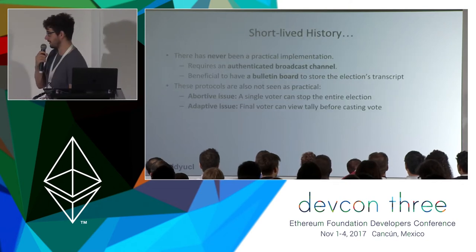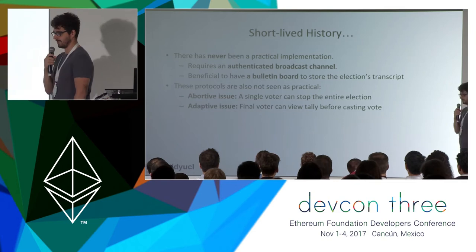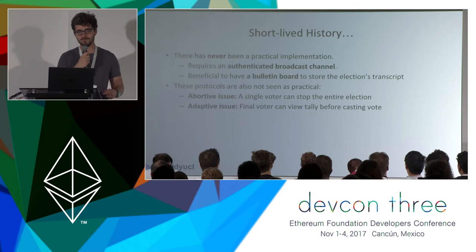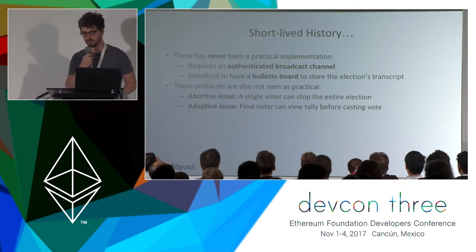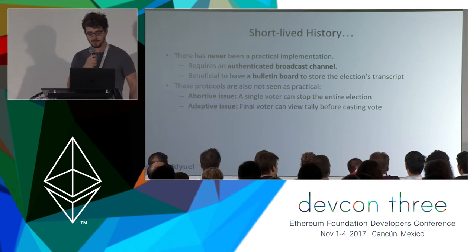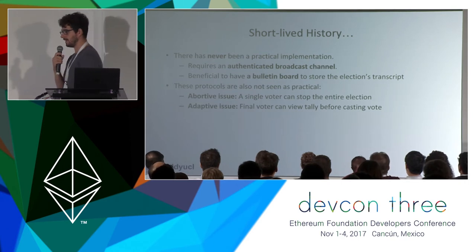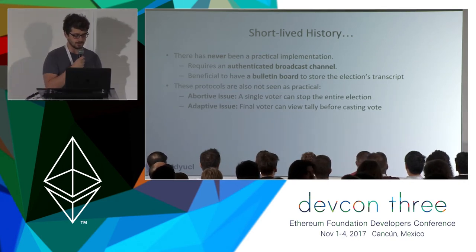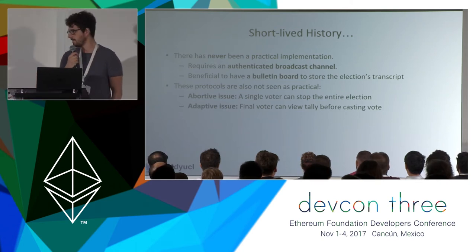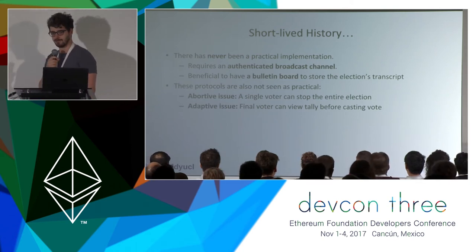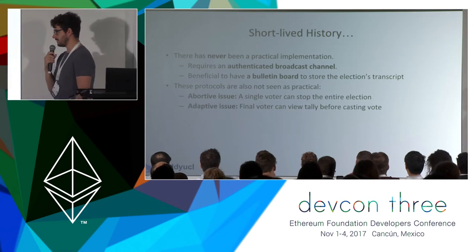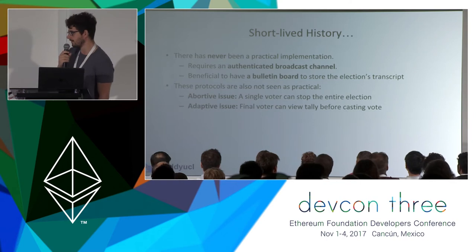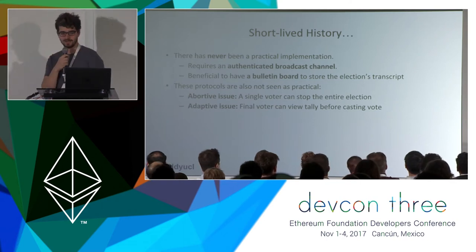These protocols have had a short-lived history — there has never been a practical implementation of a self-tallying election. One reason is it requires an authenticated broadcast channel where everybody can communicate, and it's also very beneficial to have a public bulletin board to store the election transcript. These protocols also have two other issues: a single voter can stop the entire election by not casting their vote, and there's an adaptive issue where the final voter can view the tally before everybody else.